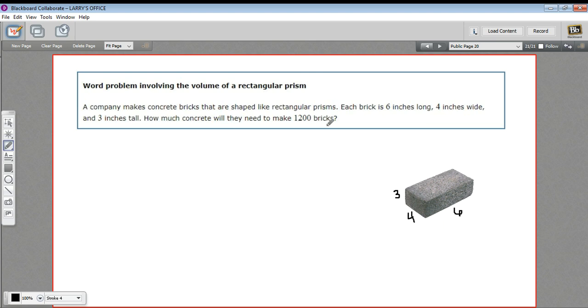And then it says how much concrete will they need to make 1,200 bricks? So I think what we need to do here is figure out the volume of concrete it takes to make one brick, and then we'll multiply that by 1,200. That will be the volume of concrete required to make 1,200 bricks.